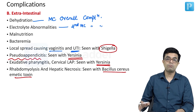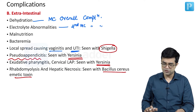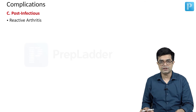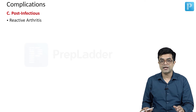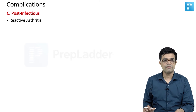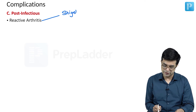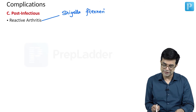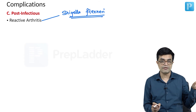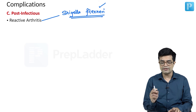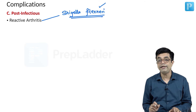Rhabdomyolysis and hepatic necrosis are seen with Bacillus cereus emetic toxin. Now we come to post-diarrheal, post-infectious complications — once the infection is over. You will have reactive arthritis. Shigella, Salmonella, Campylobacter, and E. coli have all been implicated in producing reactive arthritis. One common pathogen in an Indian setting is Shigella flexneri. Note that Shigella dysenteriae type 1 is a more common cause of dysentery, but among Shigella, Shigella flexneri is a particularly important pathogen for reactive arthritis in the Indian setting.